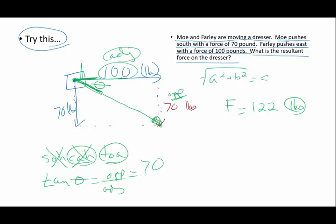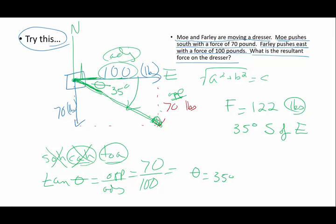So tangent of theta is going to be opposite over adjacent. Opposite side is 70, adjacent is 100, and remember that is just the tangent, so I have to go second tangent, and I end up with an angle of 35 degrees. Now if this is 35 degrees, remember we're about clear communication. How do I say what direction the dresser is going to be moving? Well, north is here, east is here, so I have got 35 degrees south of east, to the south from east.